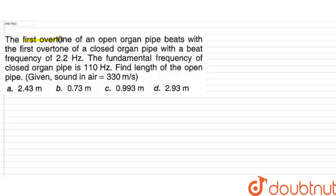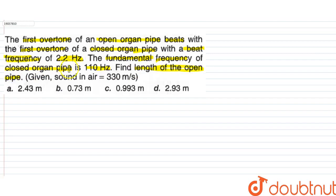Our question says that the first overtone of an open organ pipe is beating with the first overtone of a closed organ pipe, and its beat frequency is given to be 2.2 Hz. We are told the fundamental frequency of the closed organ pipe is 110 Hz. We need to find the length of our open organ pipe. The speed of sound in air is given as 330 meters per second.